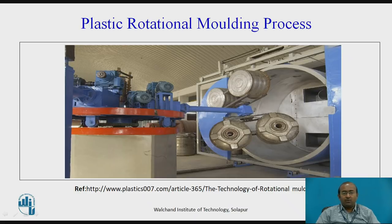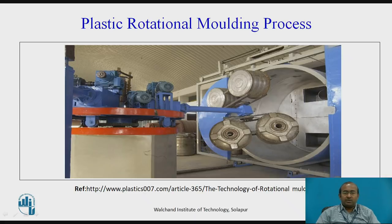We will see one more image in real time to observe how the setup looks. To the right side, you can observe a big cylinder which consists of the heating as well as cooling arrangement. Four distinct molds are connected to the main shaft, which is always in a rotary condition. On the left-hand side, you can observe the rotary mechanism which controls the speed and further specifications. The four molds are used to produce the particular part — can you identify the same?